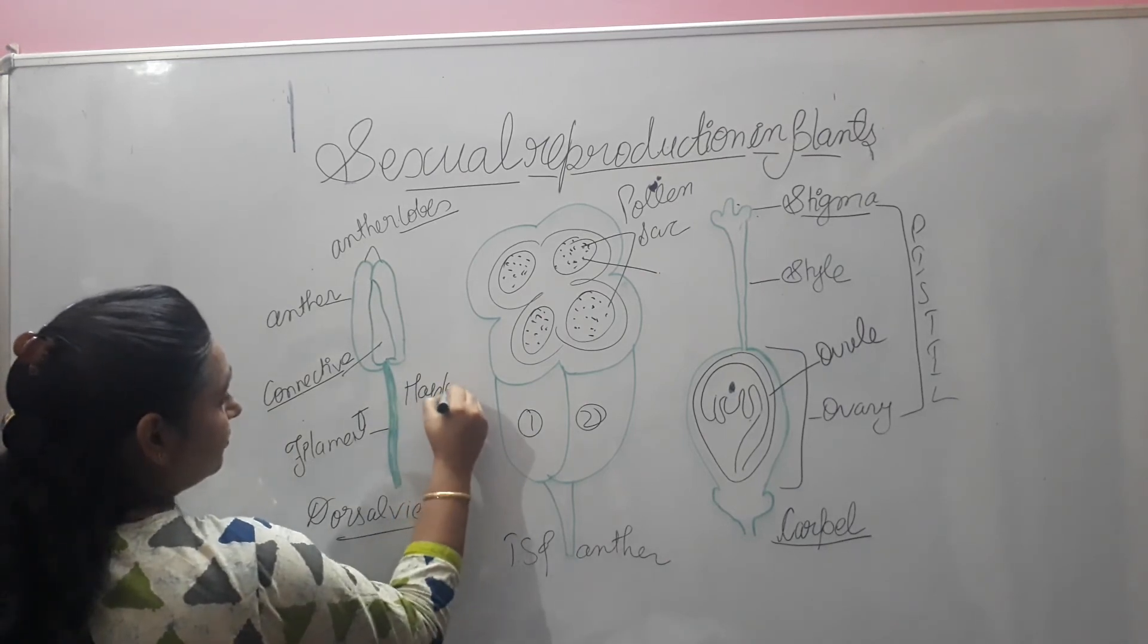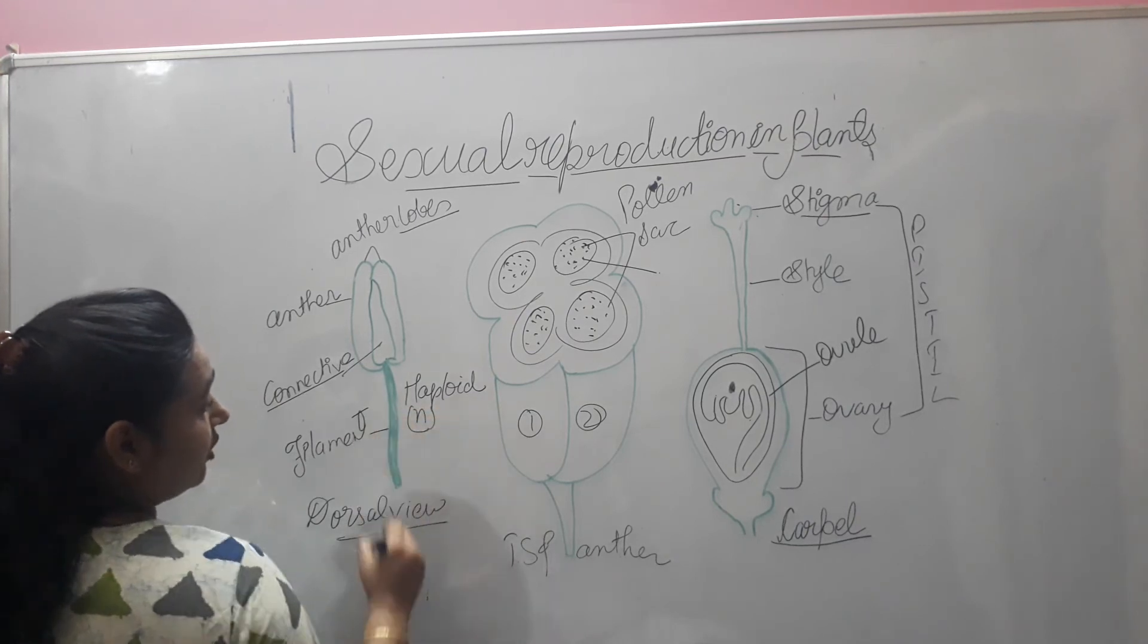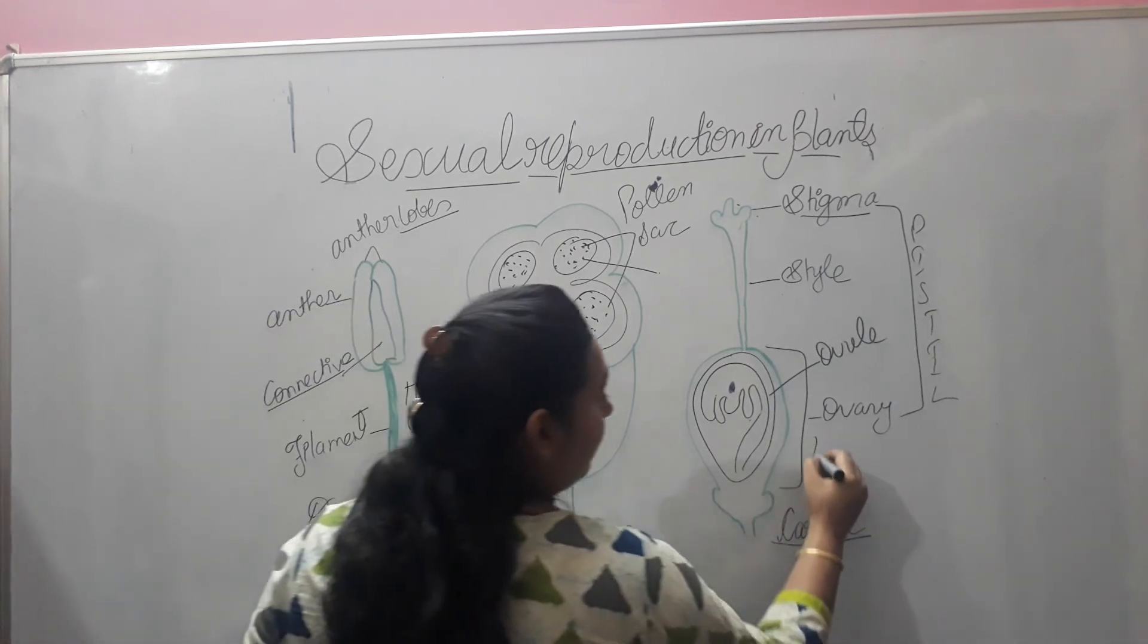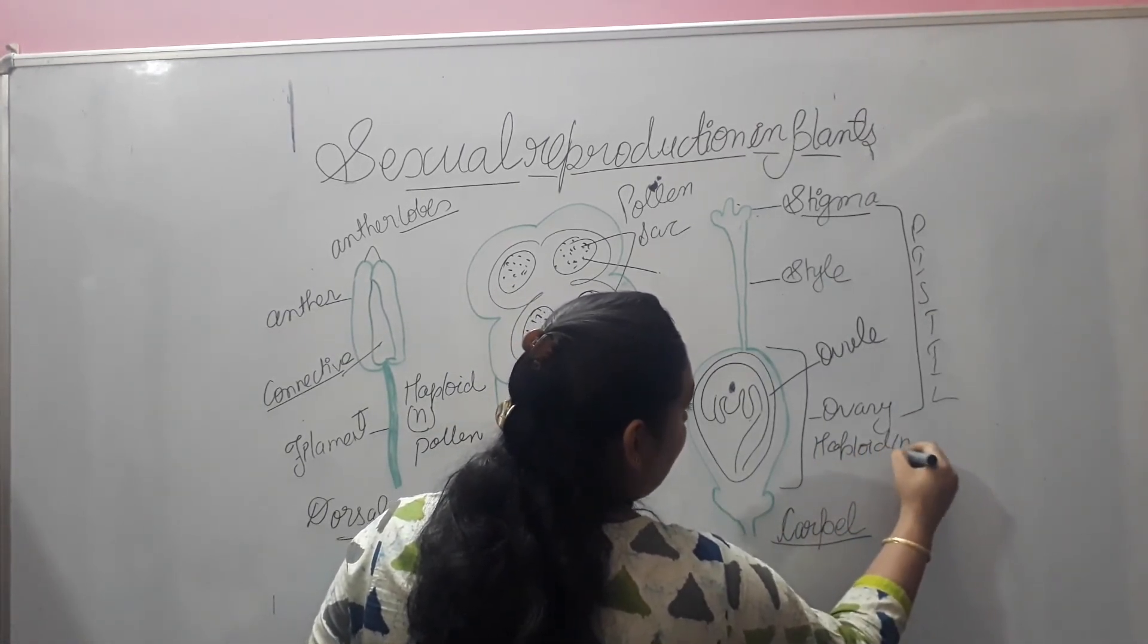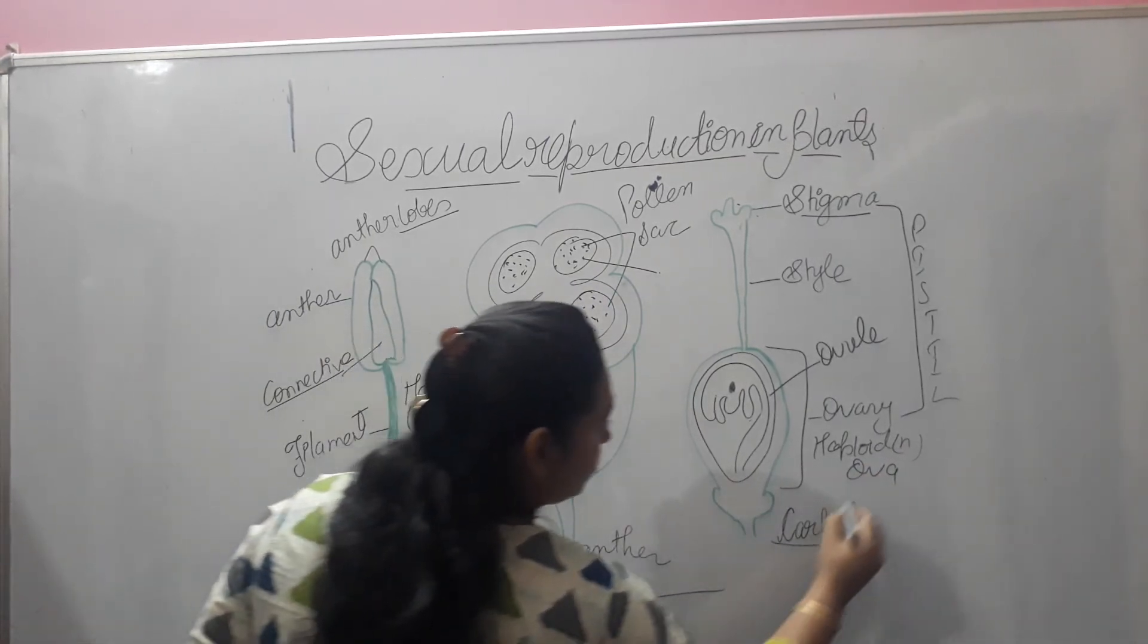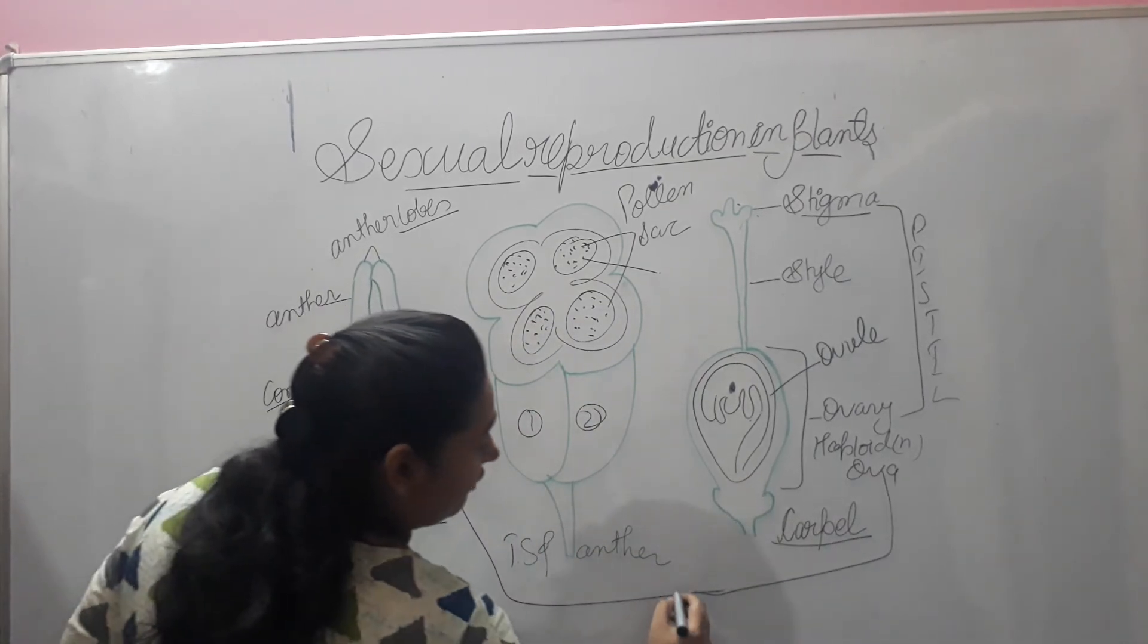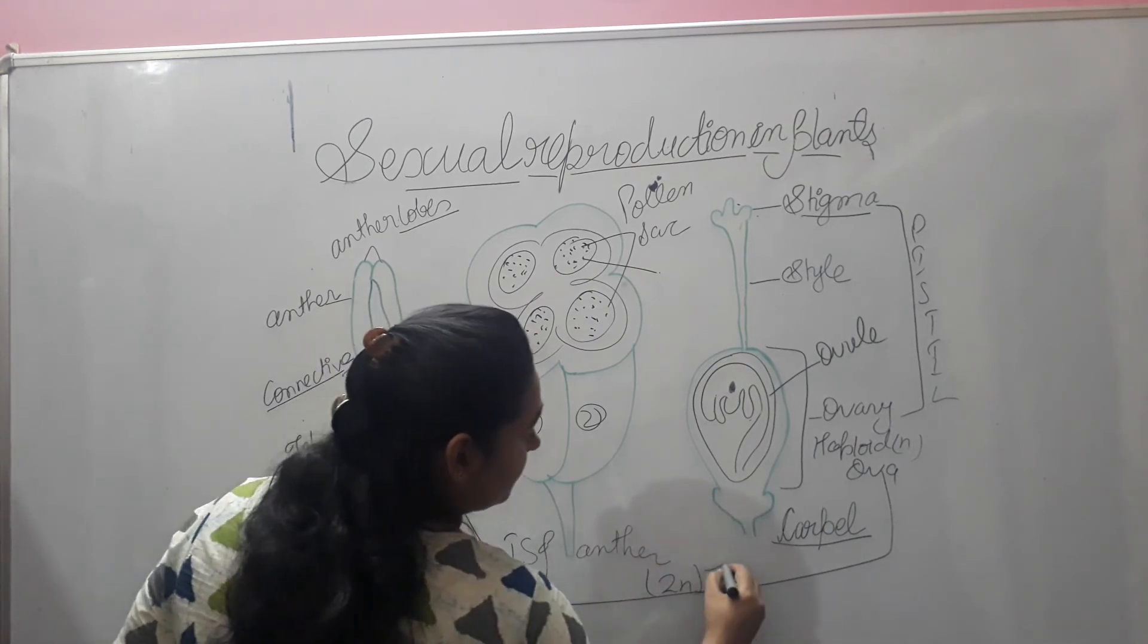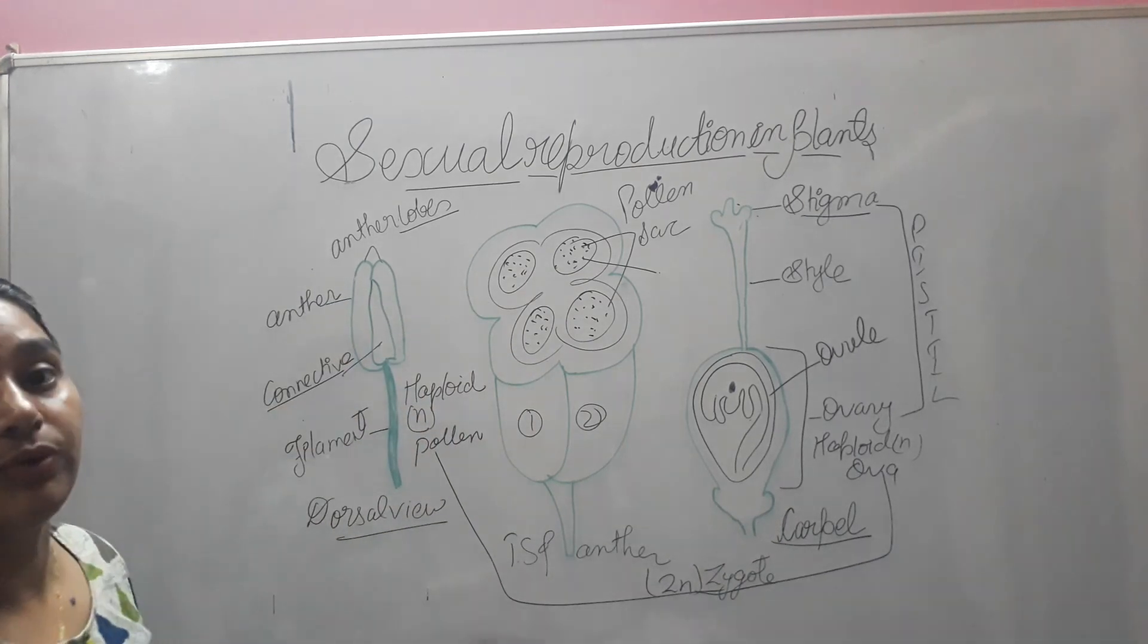that is N pollen and haploid, which is N, ovum will be released and when these two join, they will make 2N zygote, which will result in the next embryo.